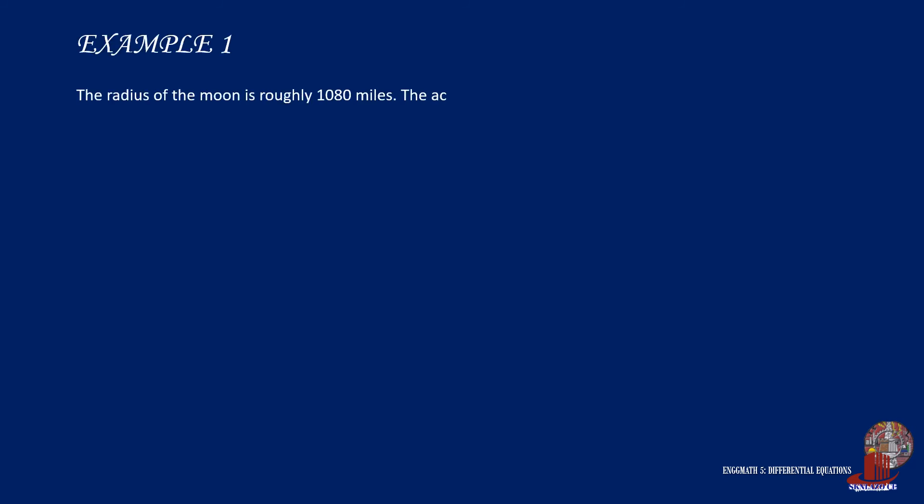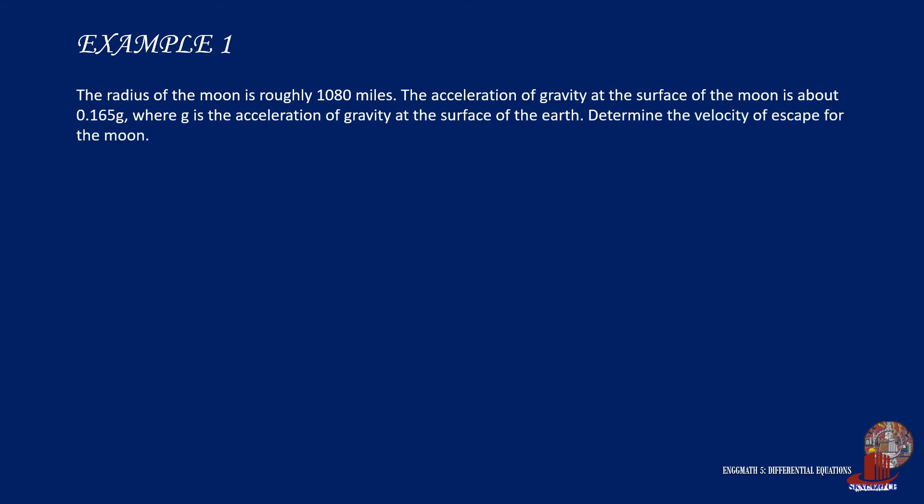Let's take another example. The radius of the Moon is roughly 1080 miles. The acceleration of gravity at the surface of the Moon is about 0.165 g, where g is the acceleration of gravity at the surface of the Earth. Determine the velocity of escape for the Moon.